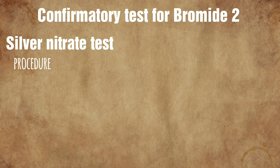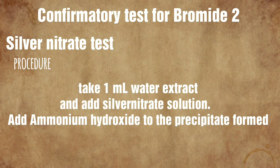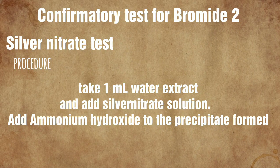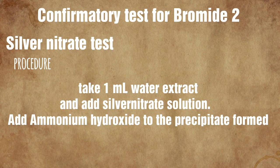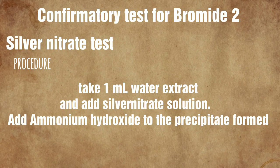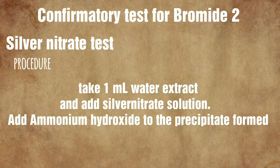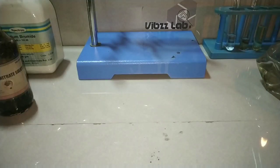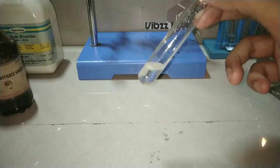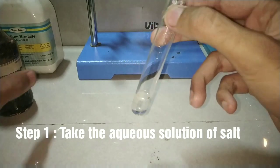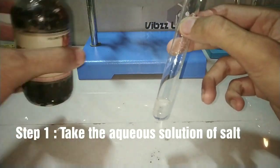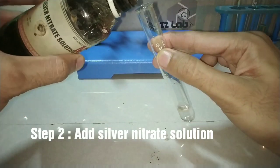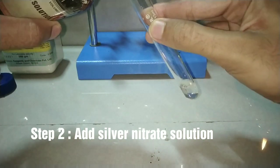The next confirmatory test is the silver nitrate test. Here we take the aqueous solution of the salt, add silver nitrate solution, and then add ammonium hydroxide. I have taken the aqueous solution of the salt, and now we will be adding the silver nitrate solution to observe the reaction.